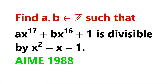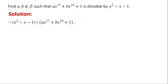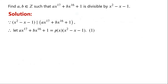Find all pairs of integers a and b such that ax to the power of 17 plus bx to the power of 16 plus 1 is divisible by x squared minus x minus 1. Because x squared minus x minus 1 divides ax to the power of 17 plus bx to the power of 16 plus 1, we let ax to the power of 17 plus bx to the power of 16 plus 1 equal p of x times x squared minus x minus 1, where p of x is a polynomial of degree 15.